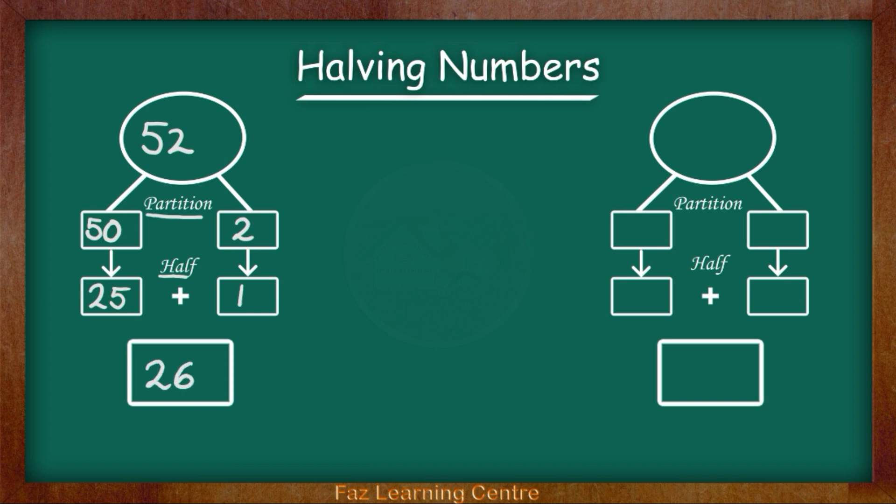Let's look at the next example. The next example is 36. So let's partition 36. 36 have 3 tens. The 3 tens are 30. 10, 20, 30.